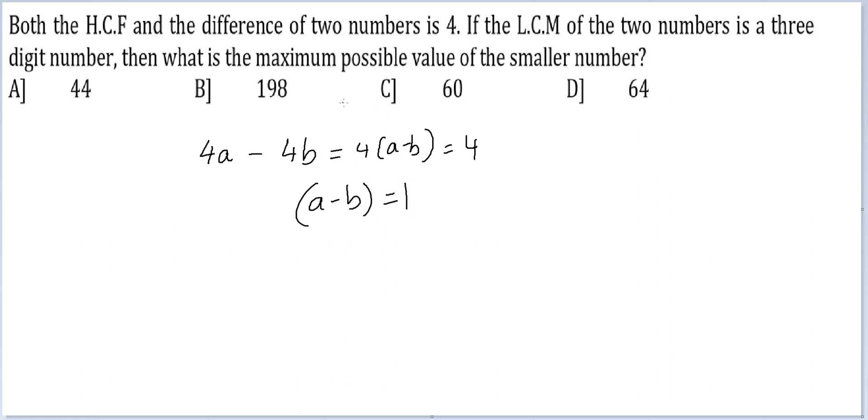This essentially means the two numbers that you are looking for here are consecutive numbers. A and B are two consecutive numbers, or the two numbers you are looking for are two consecutive multiples of 4.